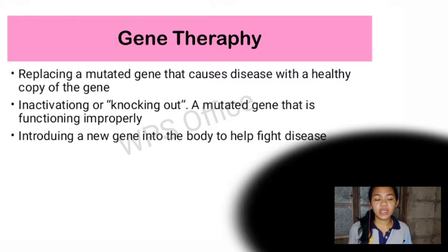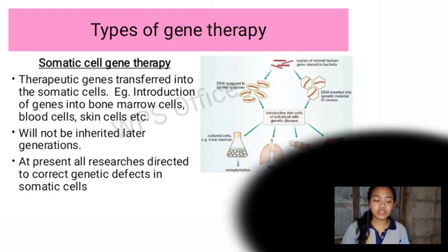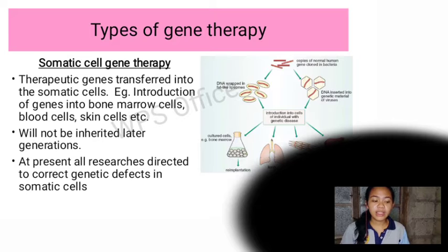There are two types of gene therapy. The first is somatic cell gene therapy, where therapeutic genes are transferred into somatic cells. Examples include the introduction of genes into bone marrow cells, blood cells, and skin cells. This type will not be inherited by later generations. At present, all research is directed to correct genetic defects in somatic cells.